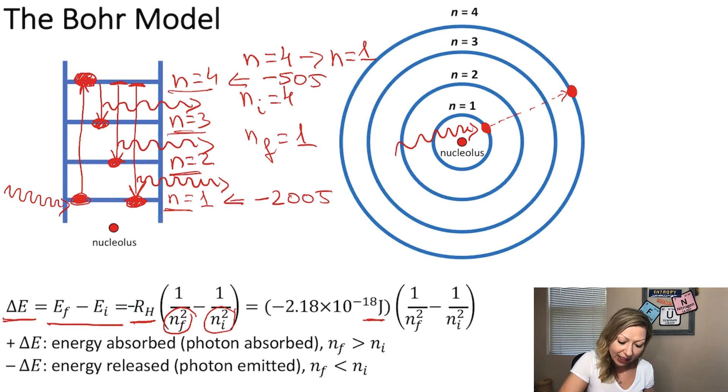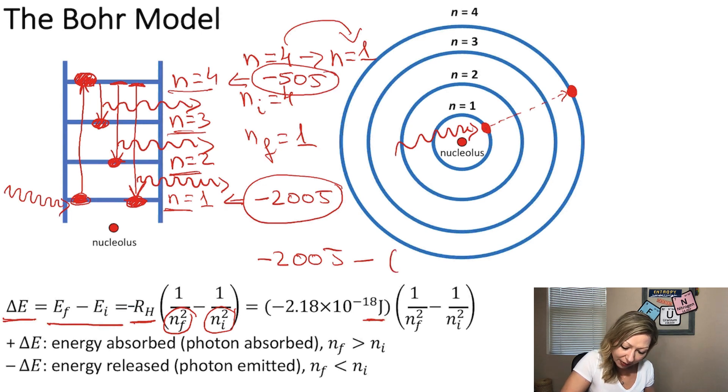If we go from N equals 4 to N equals 1 and the energy for N equals 1 is minus 200, that is our final state, so minus 200 joules. And we subtract from it the energy of the initial state, which is minus 50 joules. We are going to get minus 150 joules. So literally, when the electron transitions from a higher to a lower energy state, energy is released in a form of a photon, and the change in energy is going to have a negative sign.